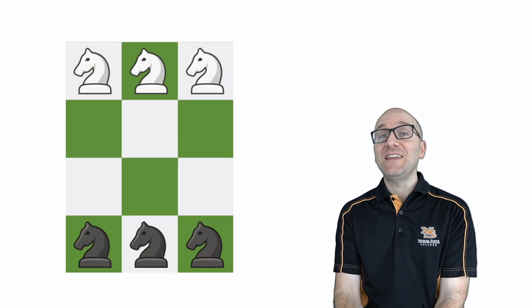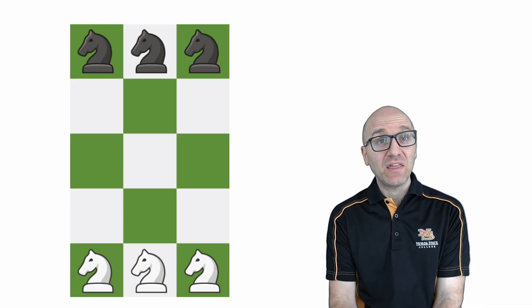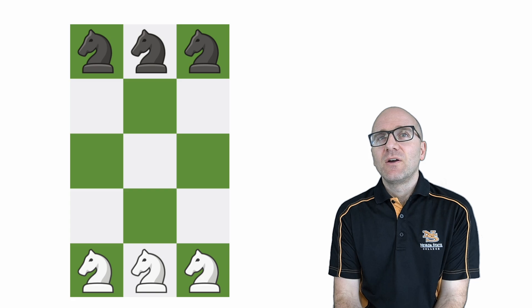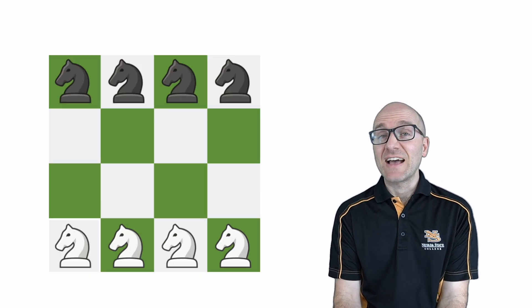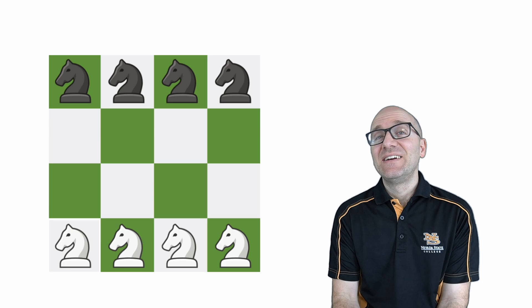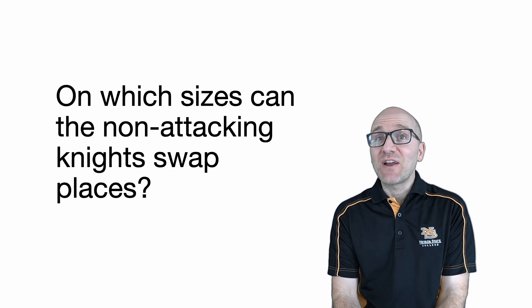Now that you know how to solve this problem with a four by three grid, I'll leave you with a couple of related challenges. Can you swap three knights of each color on a five by three grid? Is it even possible? What if you had four knights of each color on a four by four grid? Is that swap possible? What sizes are possible? Give it a try and leave your answer in the comments.